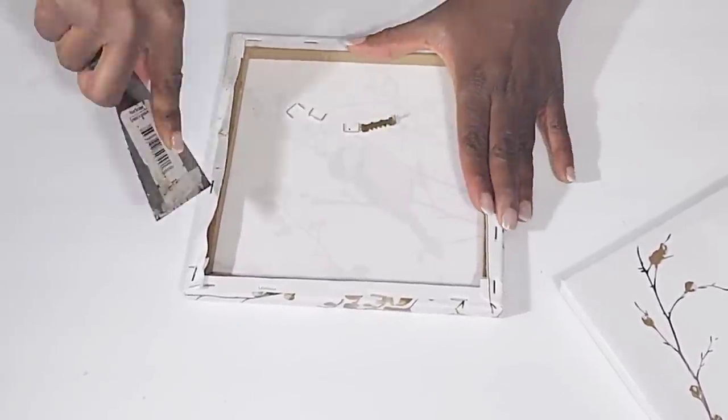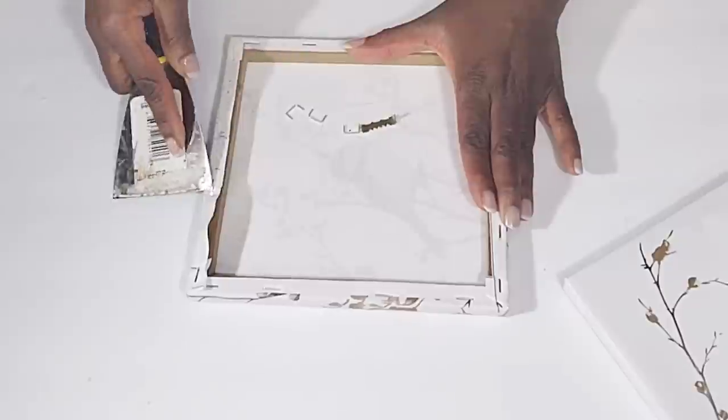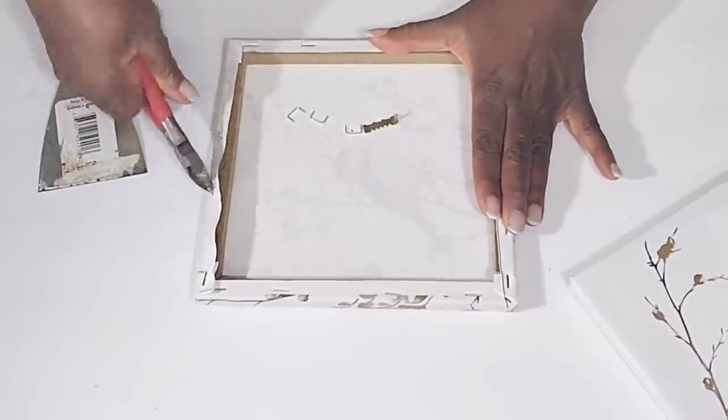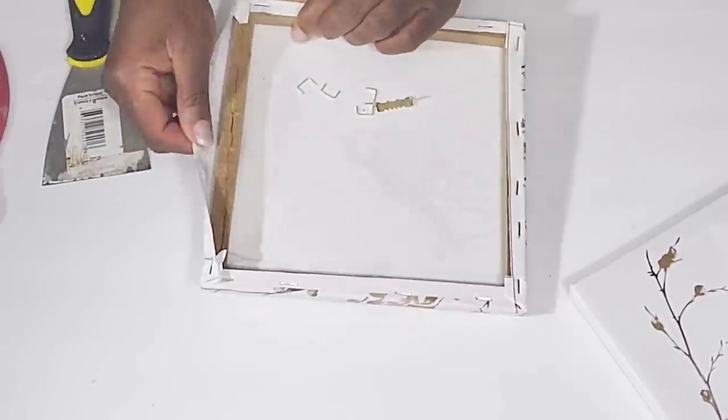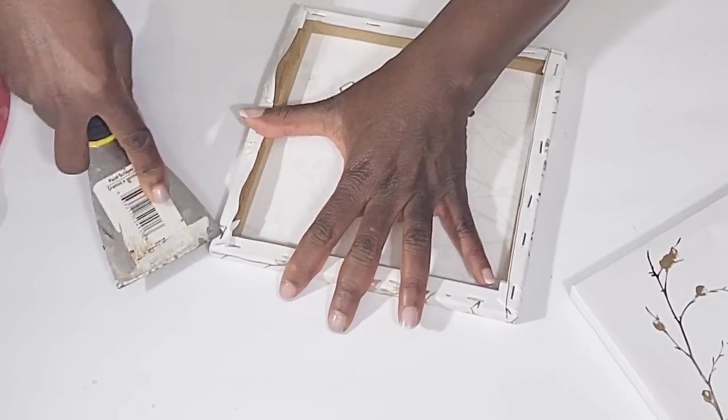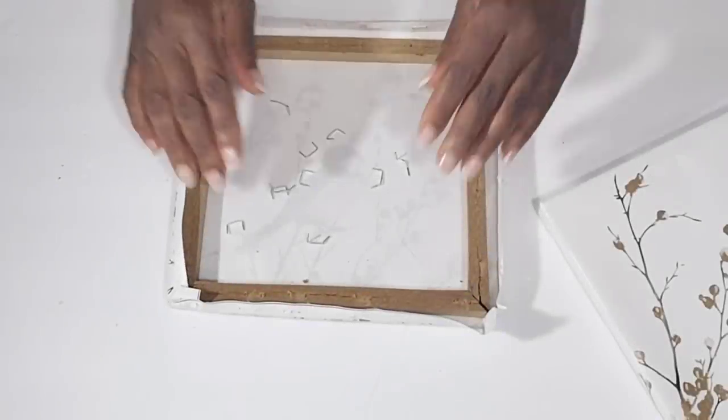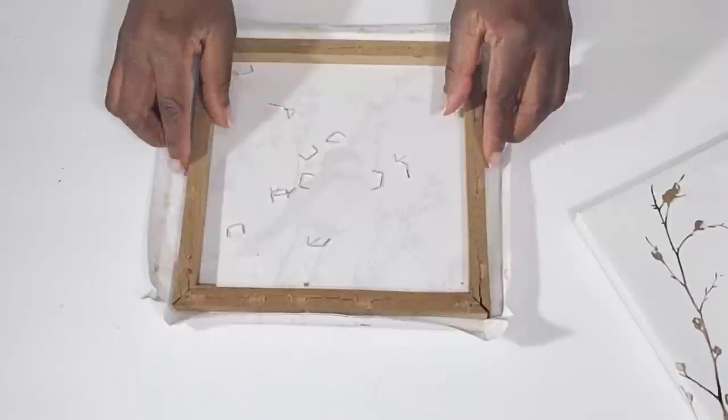I'm just using this little spatula I have to help pull the staple up, and I can use my other little tool to help pull the staples out if they become a little tough. This is just the way I do them. I'm trying to make sure that the wood stays intact.